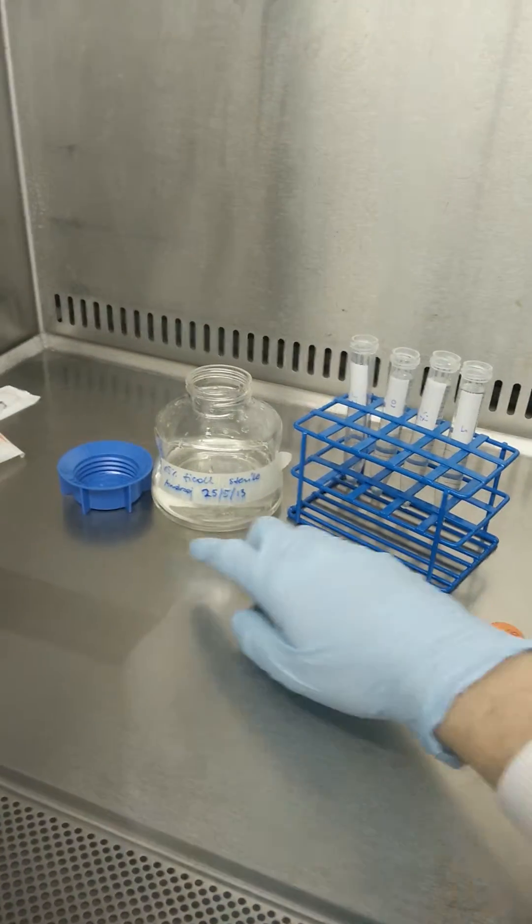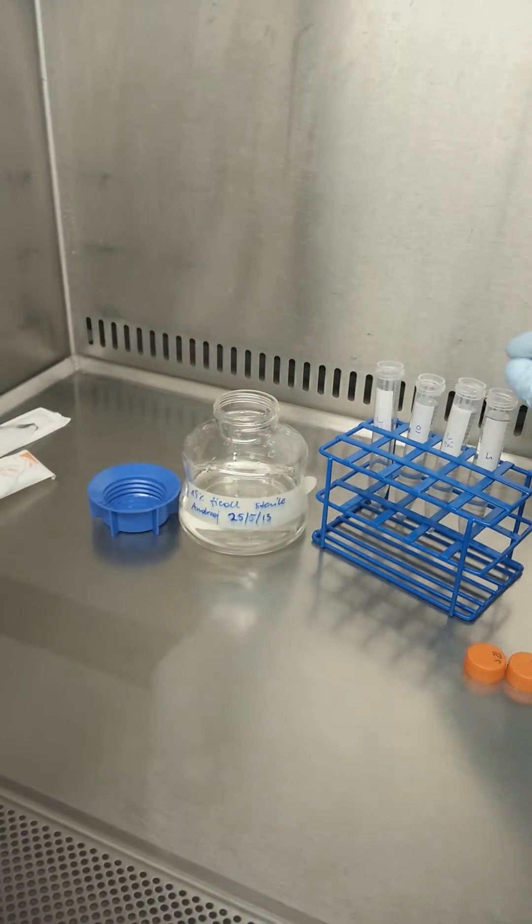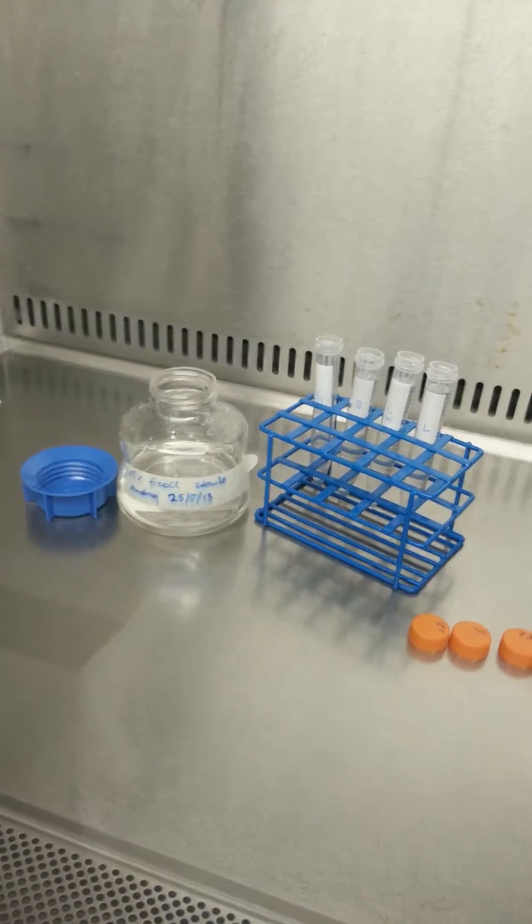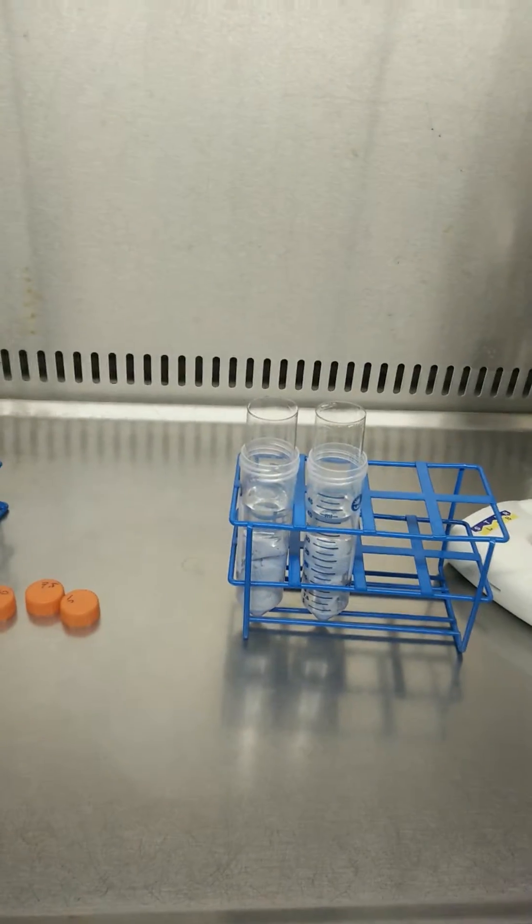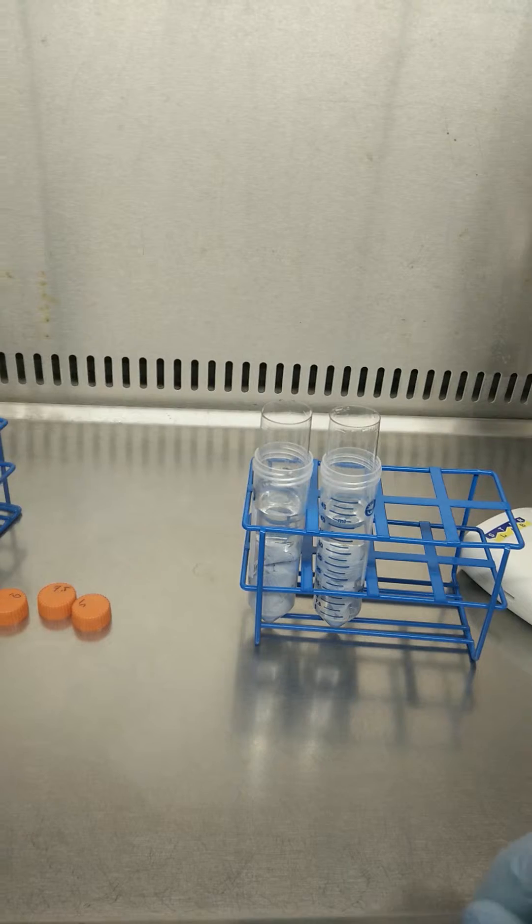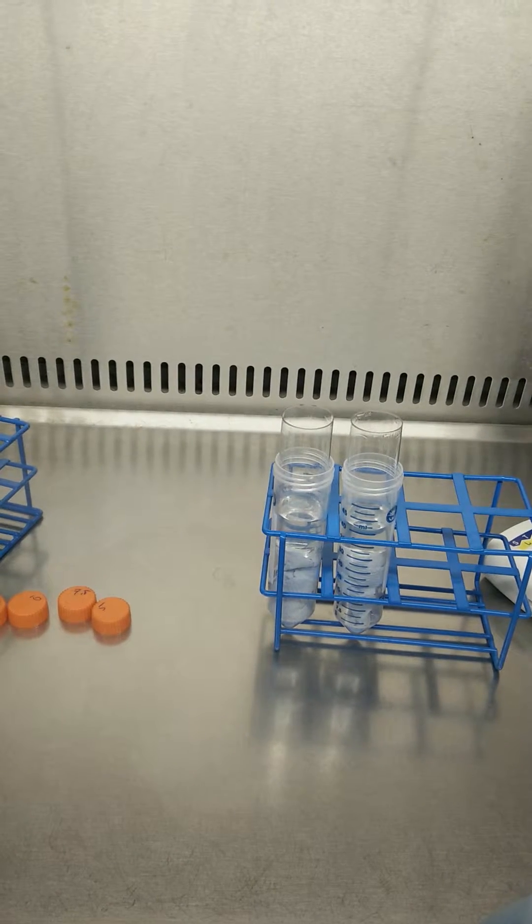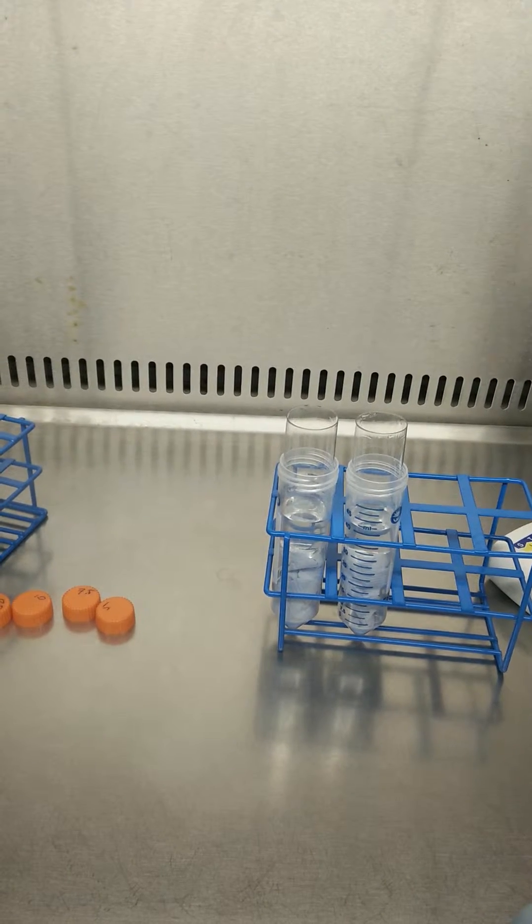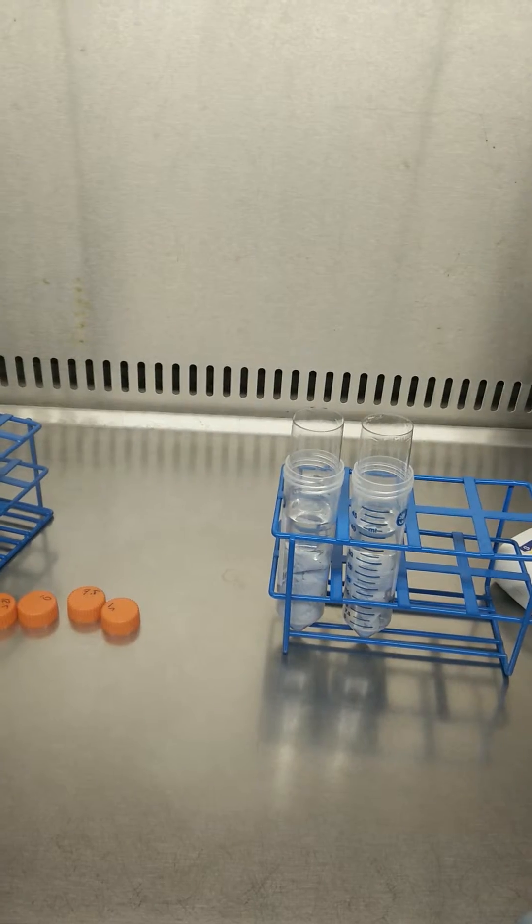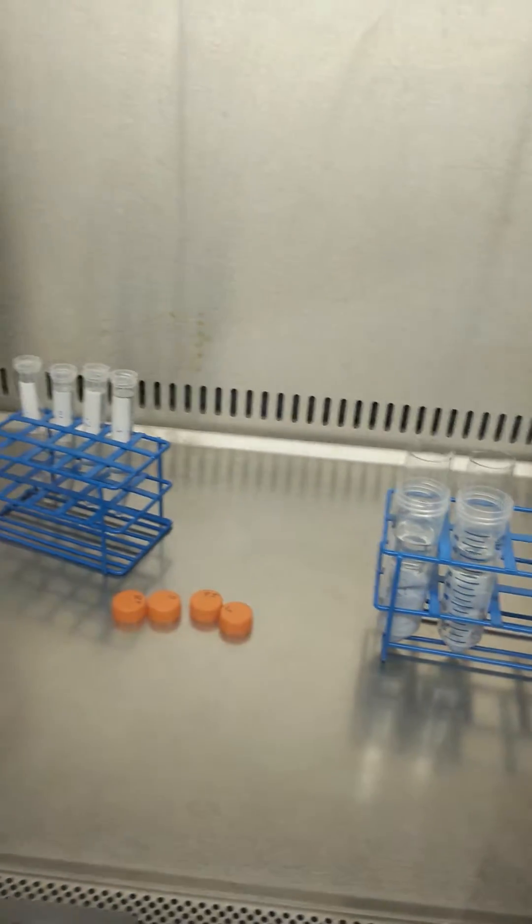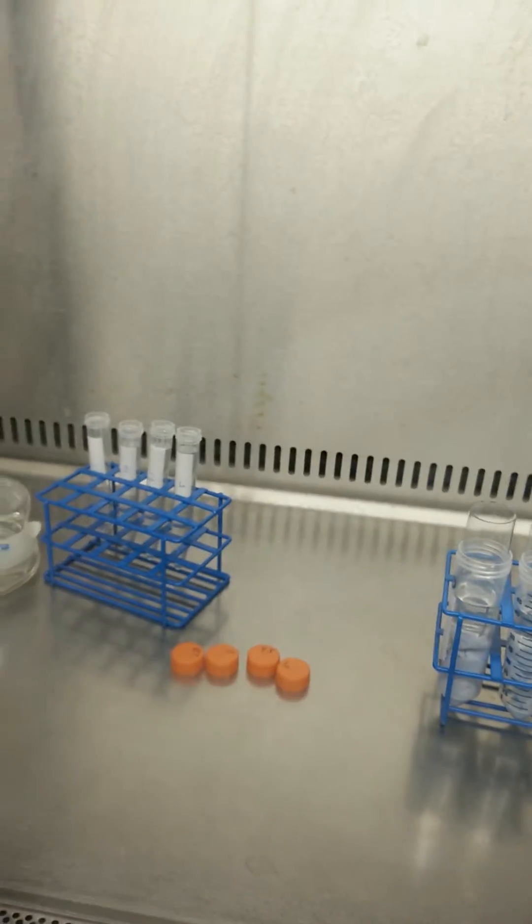I have here solutions of different densities from 15% to 5%, and I need to put them in these tubes, layer them on top of one another. The thing is that I need to do it very slowly so that the layers don't mix with one another, and I need to do it in this hood so that it's all perfectly sterile.